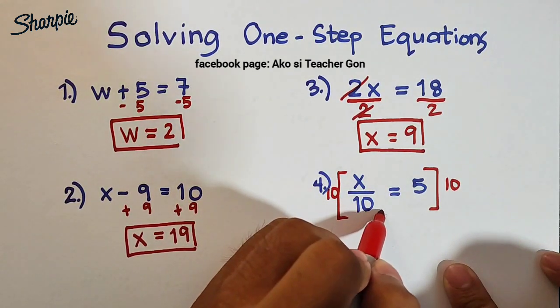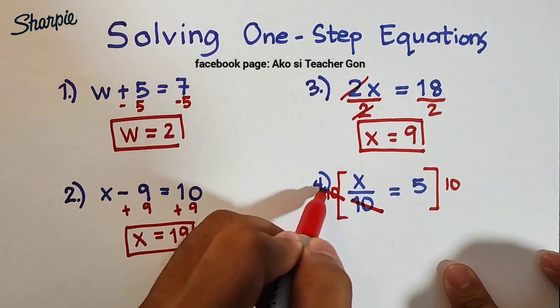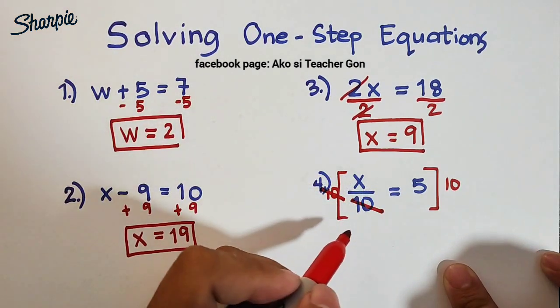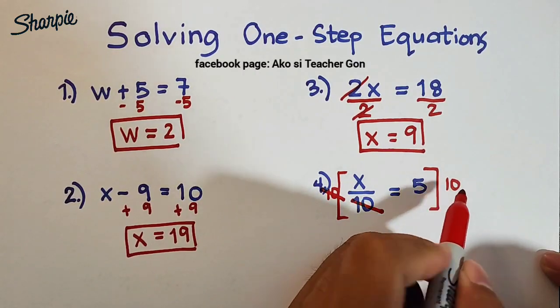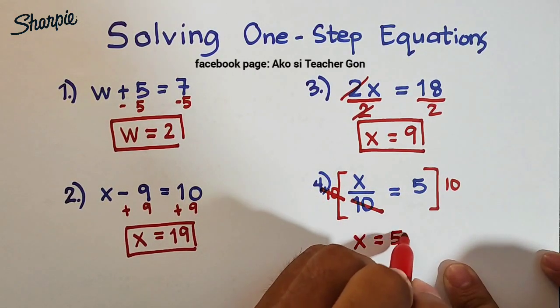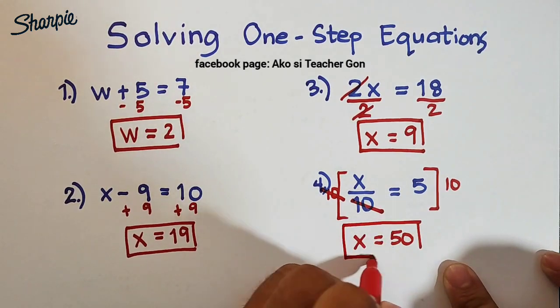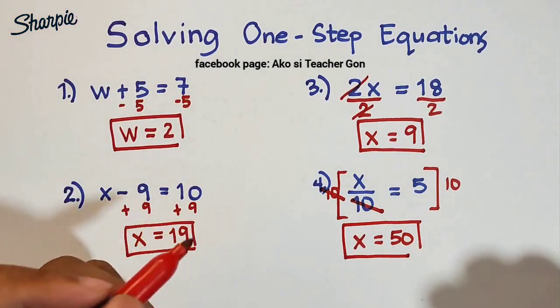So we can cancel out this denominator 10 and this one. What will remain is the variable x, and then equal to 5 times 10, which is 50. And this is the solution for item number four.